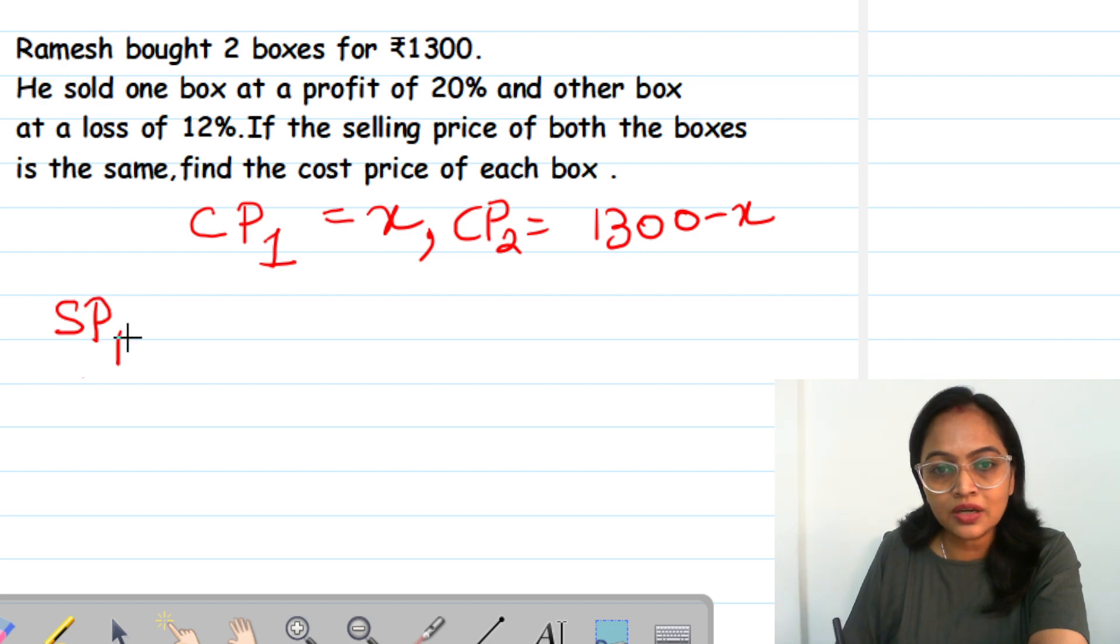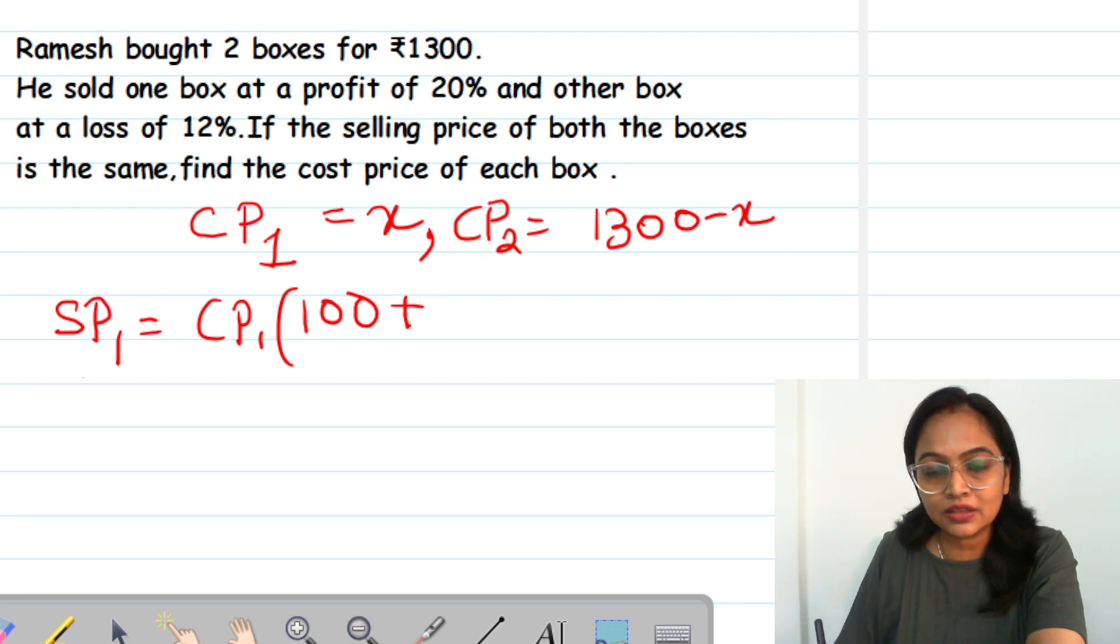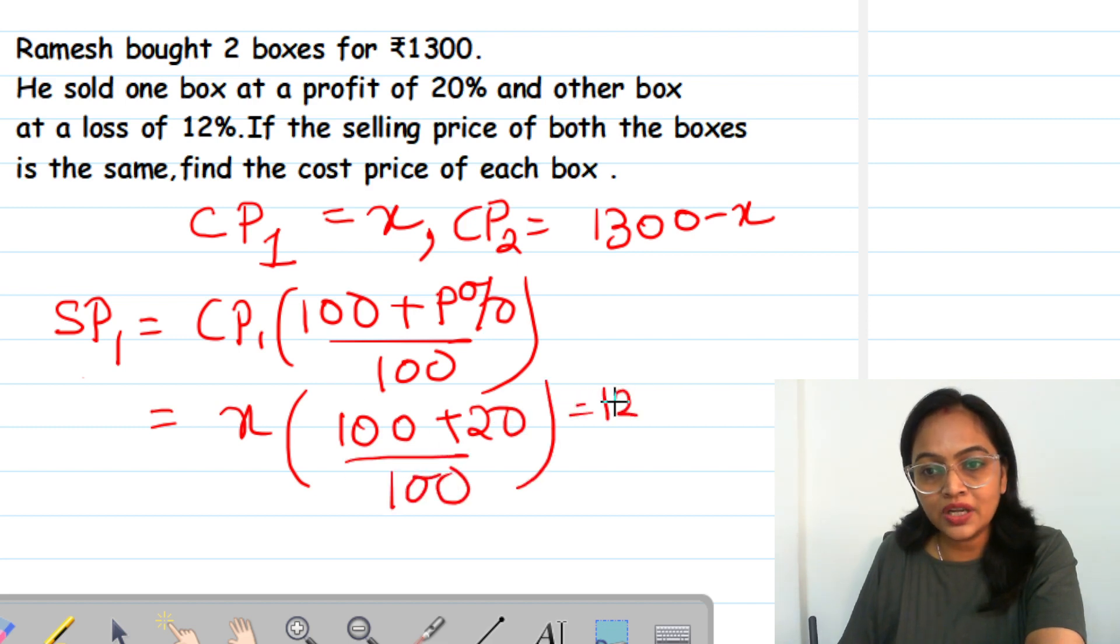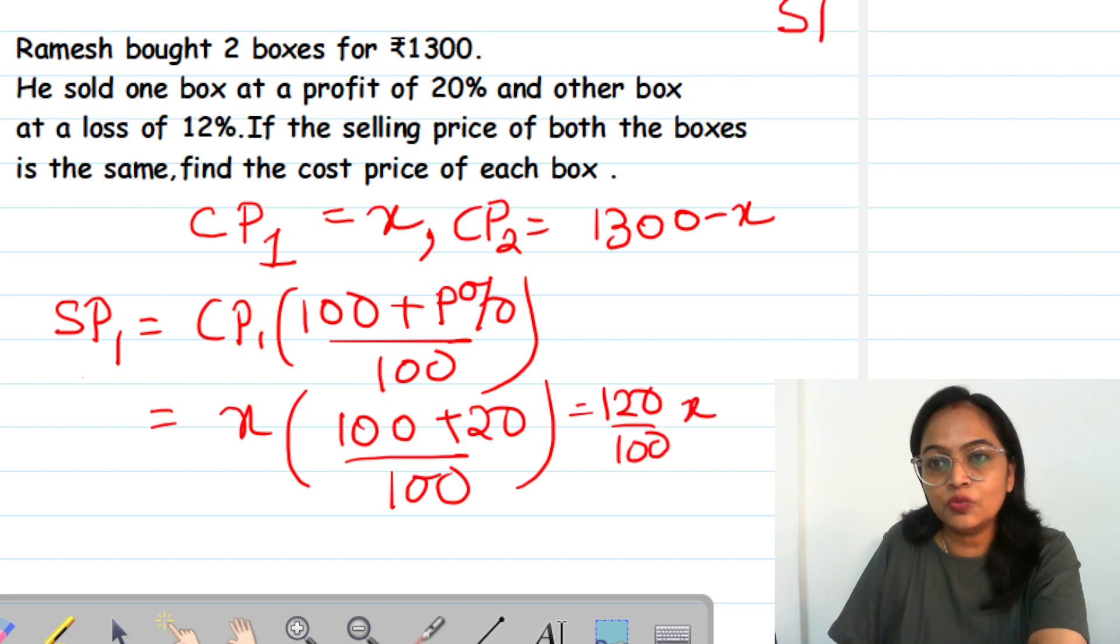Now selling price 1 would be CP1 into 100 plus profit percent upon 100. So it will be X, profit is 20, so I will write it as 20. So it is 120 upon 100 into X. So my SP1 is 120 by 100 into X.